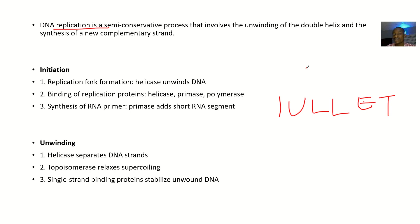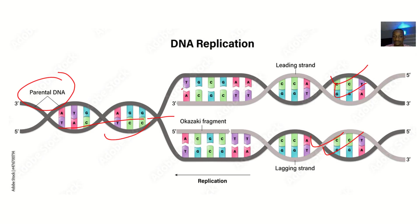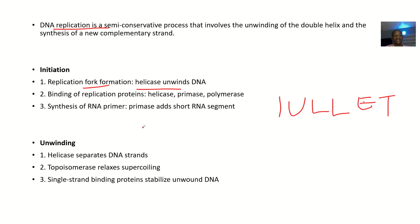The first process is initiation — this is replication fork formation. Helicase will now be unwinding the DNA. What is unwinding the DNA is helicase — you can see the helicase here. So now there will be binding of replication proteins, then there will be synthesis of an RNA primer. The primase adds short RNA segments to it.